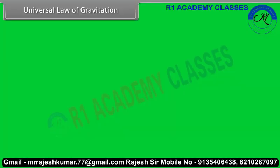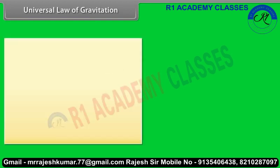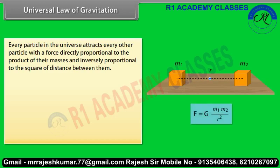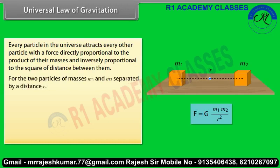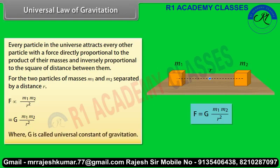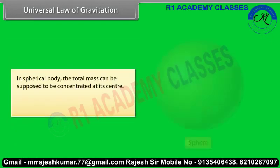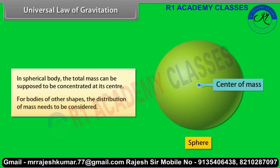Universal law of gravitation. According to Newton's law of gravitation, every particle in the universe attracts every other particle with a force directly proportional to the product of their masses and inversely proportional to the square of the distance between them. The direction of this force is along the line joining the two particles. For two particles of masses M1 and M2 separated by a distance r: F = G·M1·M2 / r². In a spherical body, the total mass can be supposed to be concentrated at its center.